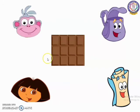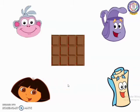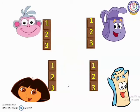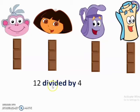Next, this chocolate has 12 pieces. We want to divide the chocolate equally among the 4 friends. When we share them equally, each one gets 3 pieces. Now 4 of them got 3 pieces of chocolate. This can be written as 12 divided by 4 equals 3.